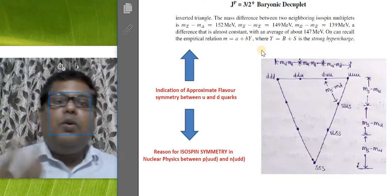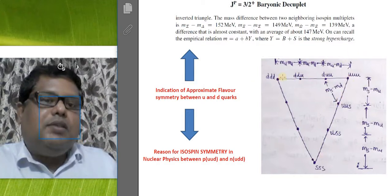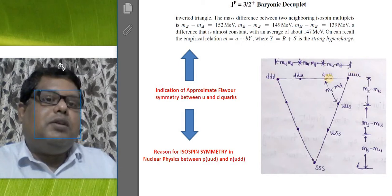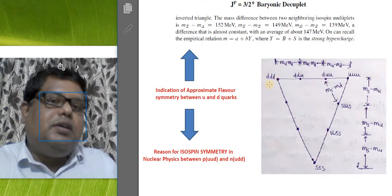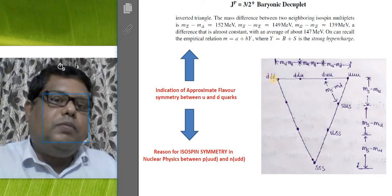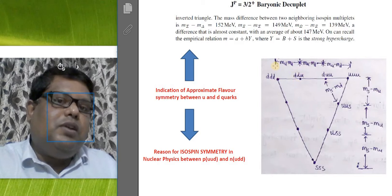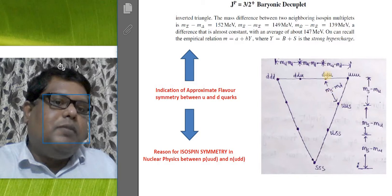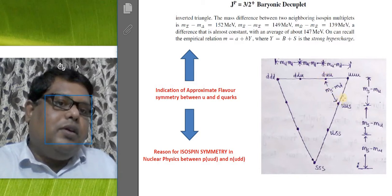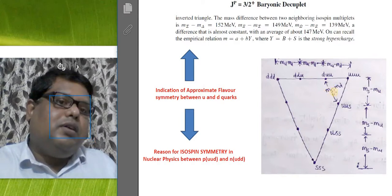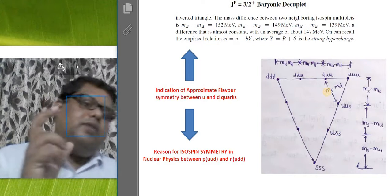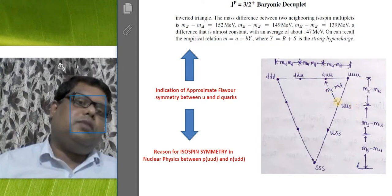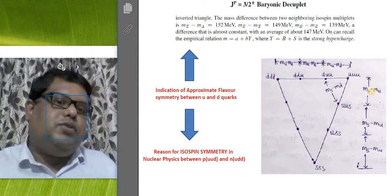The inverted diagram in terms of quark constituents shows that if you start with ddd and replace one d by u you get ddu. Going from duu to uus means d is replaced by s, and the mass difference is of order 147 MeV. This means the s quark must be heavier than the d quark, which is what this plot demonstrates.